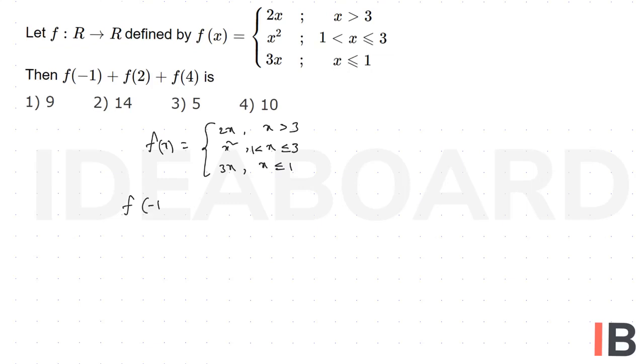Now to find f(-1) + f(2) + f(4), first f(-1): since -1 is less than 1, the defined function is 3x.